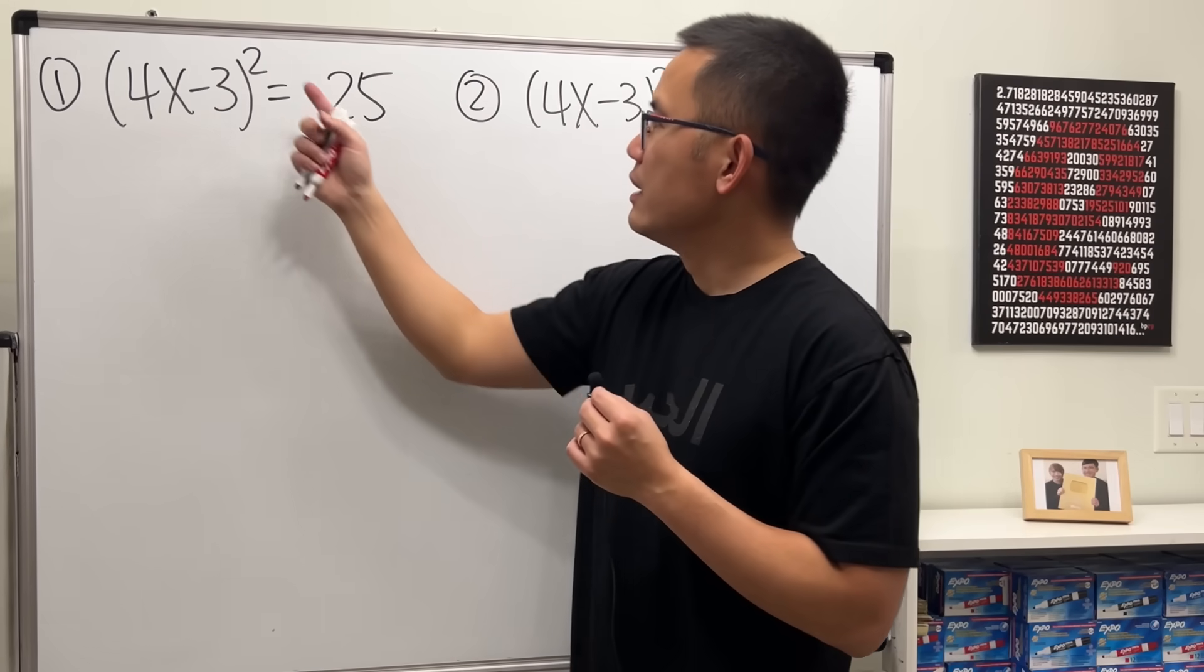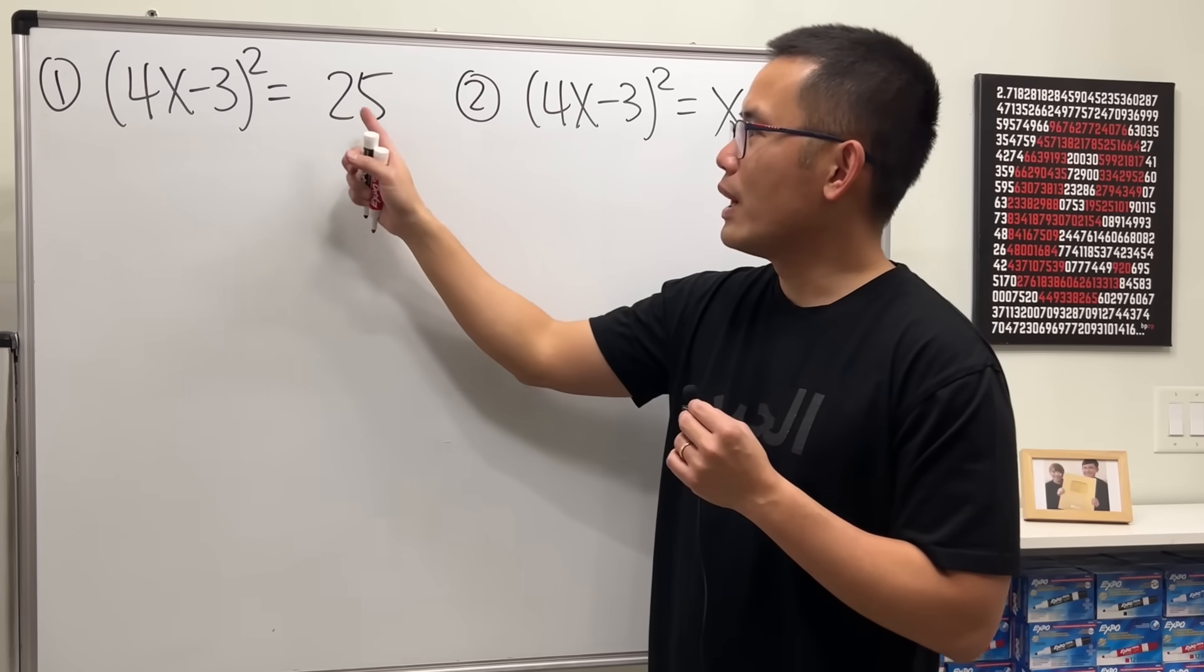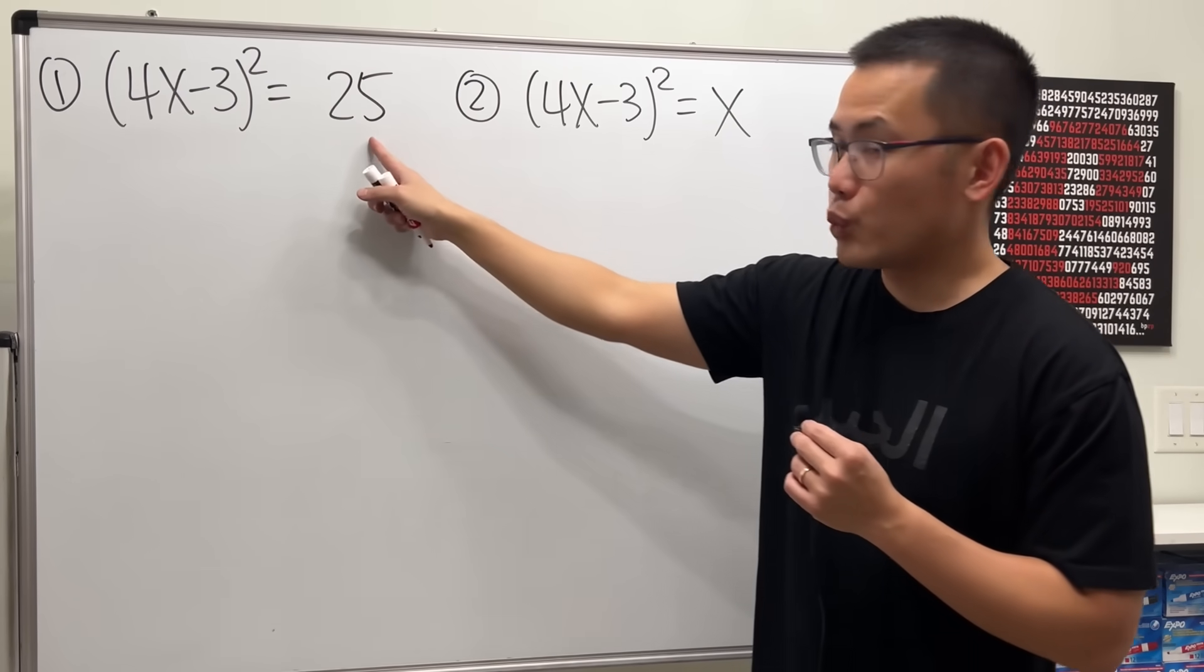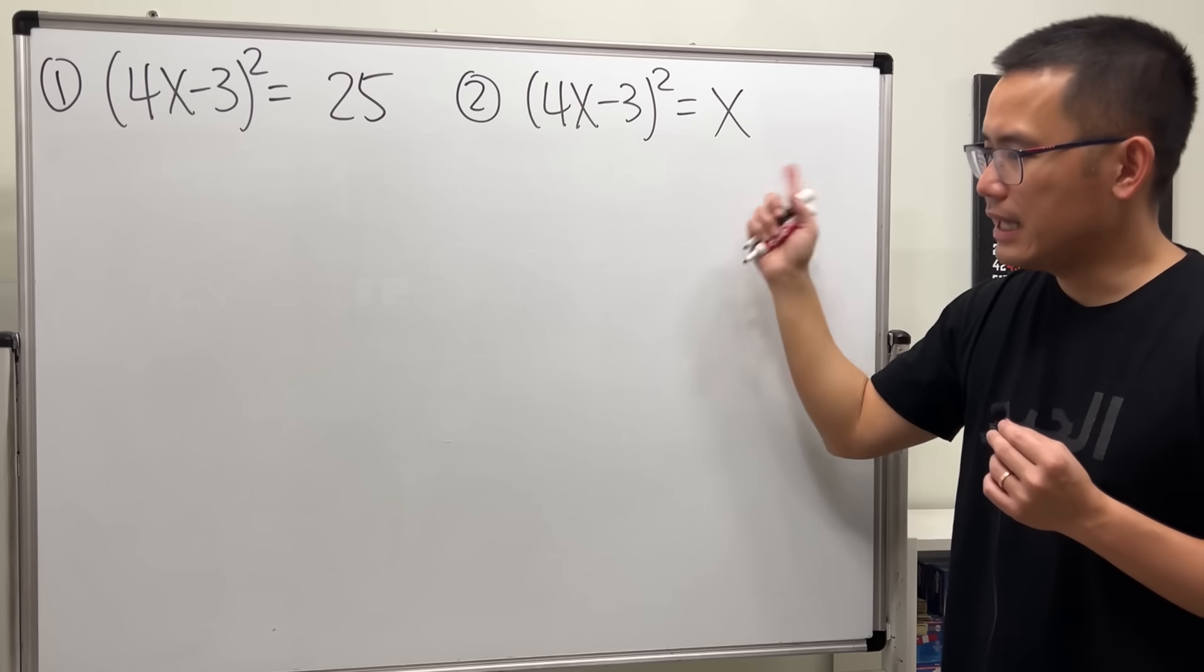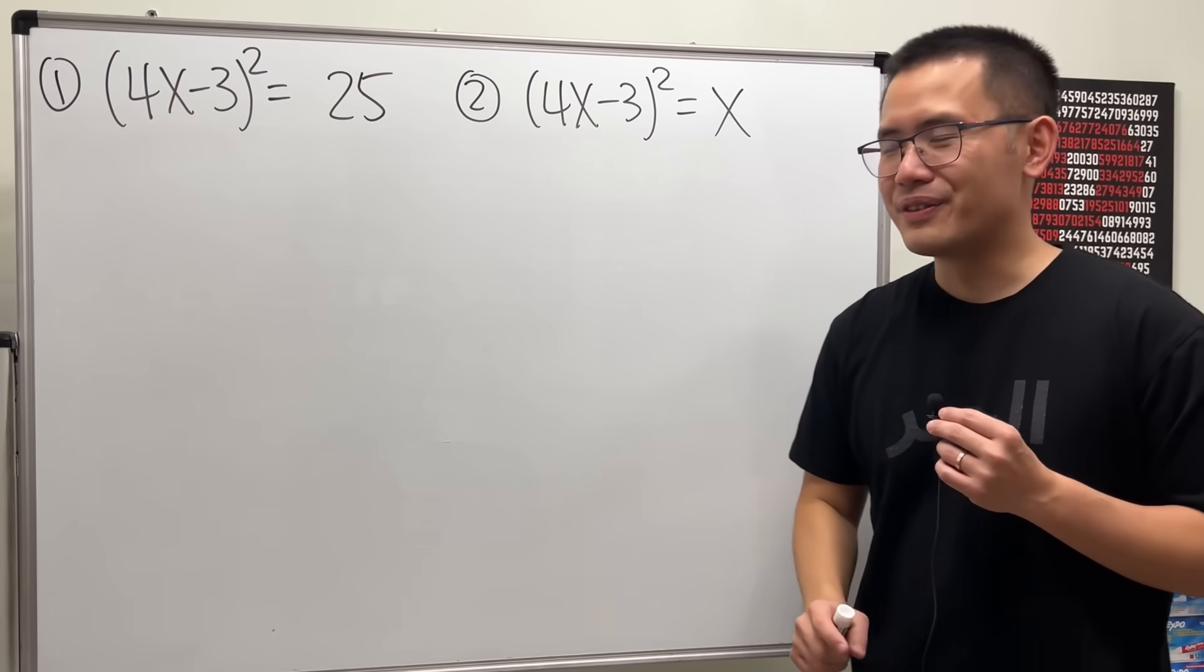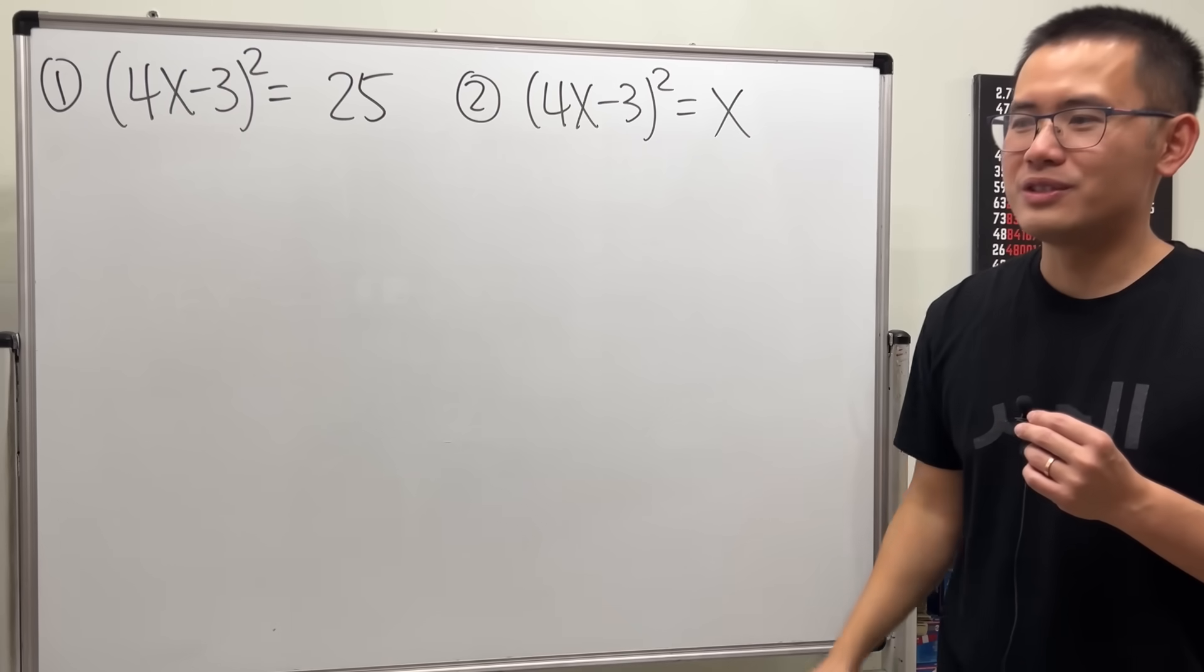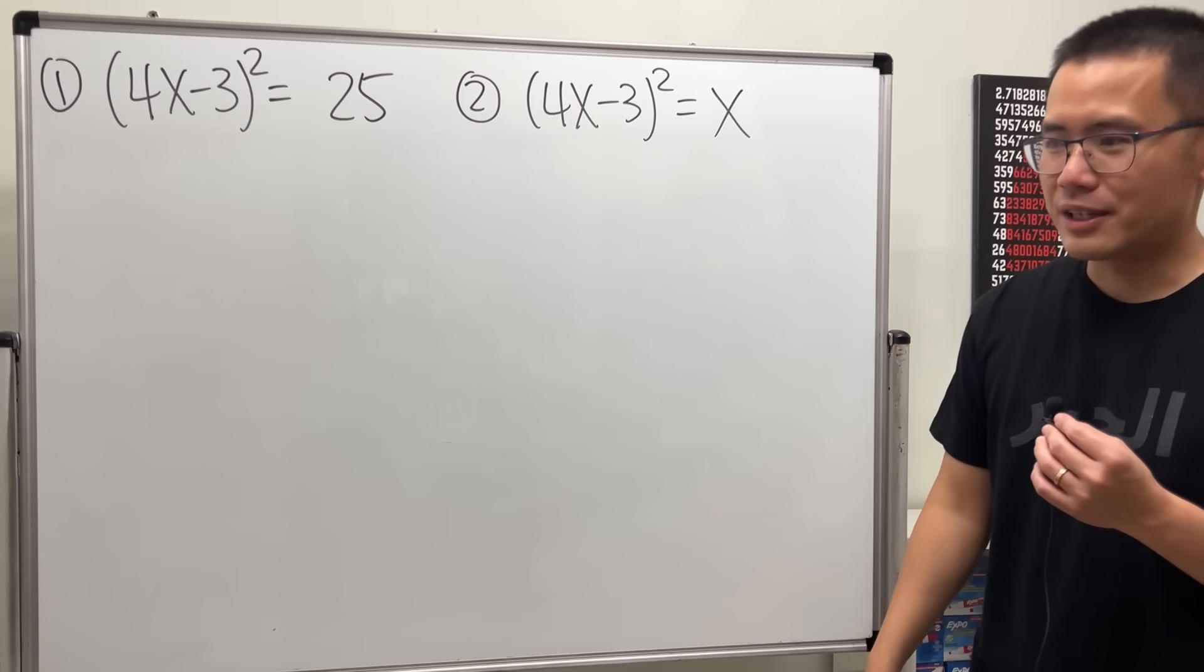Notice that the left-hand side of them are the same. But for the first one, we have this equals 25. And for the second one, we have this equals x. You know the deal. Please pause the video first and try them before you watch this solution, and comment your answer or your work in the comment section down below.